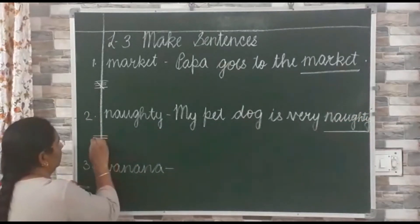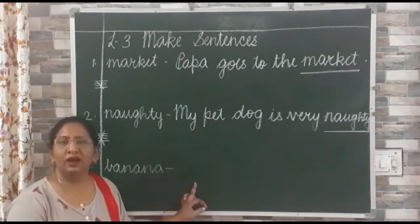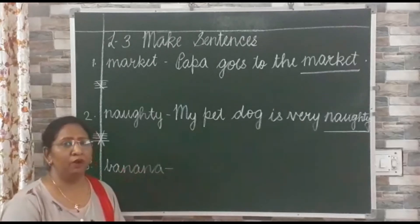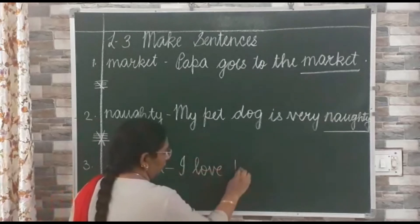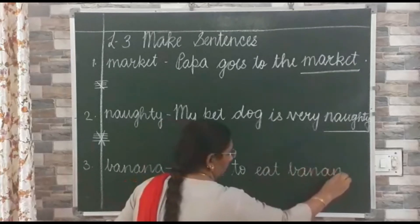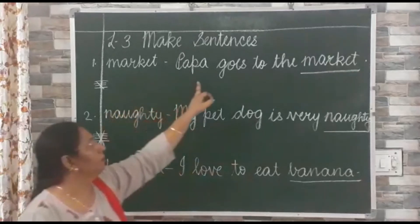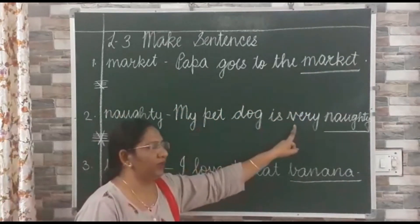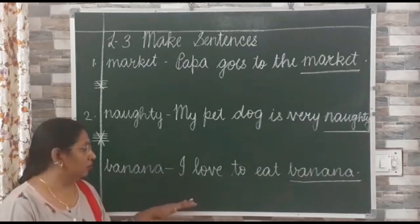After writing this, leave one more line and write down number 3: 'banana'. The sentence may be like: 'I love to eat bananas,' or 'Papa bought 6 bananas,' or 'Papa bought many bananas for me.' So let us write: 'I love to eat banana.' And underline the word on the red line. Let us revise: 1. Market — Papa goes to the market. 2. Naughty — My pet dog is very naughty. 3. Banana — I love to eat banana. This is how you have to make your own sentences.